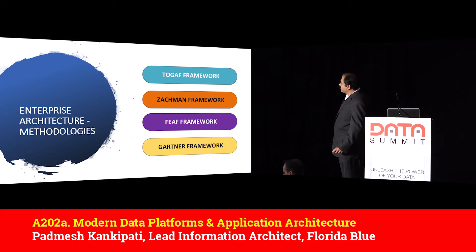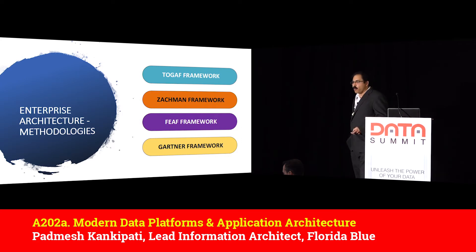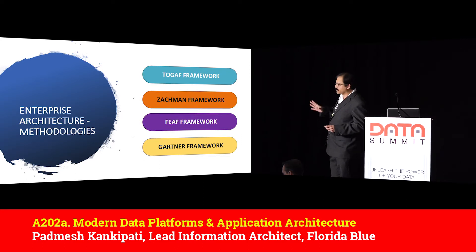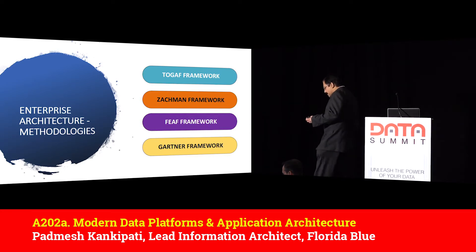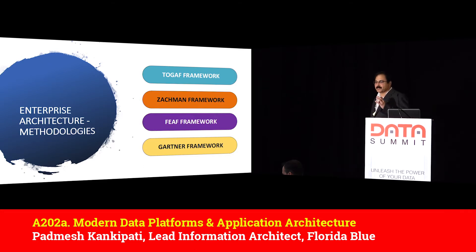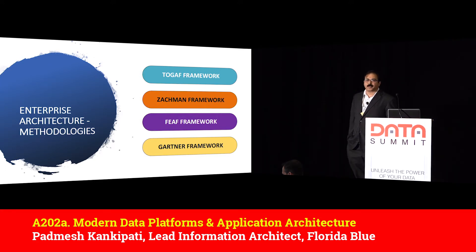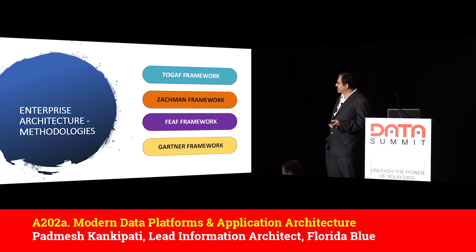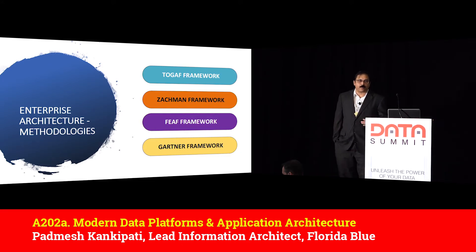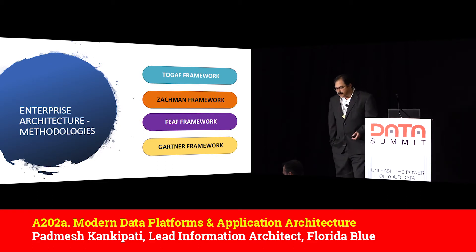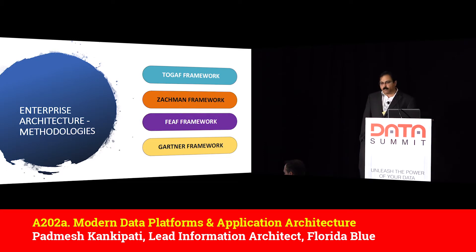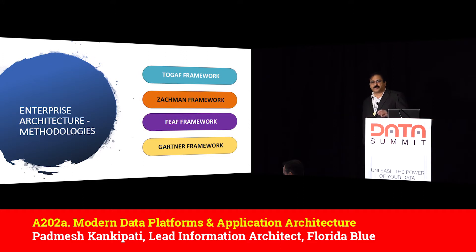One is TOGAF. The TOGAF framework provides principles for planning, coordinating, designing, implementation, and governance of enterprise architecture. It helps organizations implement a standard approach. The Zachman framework is one of the founders of enterprise architecture — it has six core architectural focal points defined by taxonomy. FEA was developed mainly for mandating IT implementation in federal agencies, and is open to anyone. Gartner came up with a practical approach focused on business outcomes.